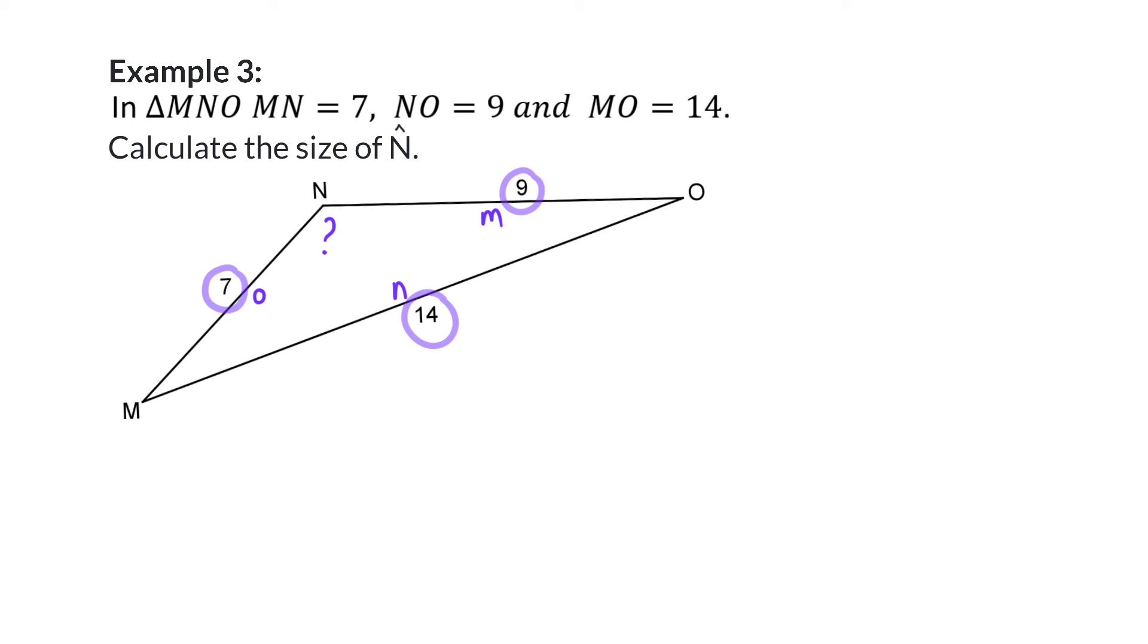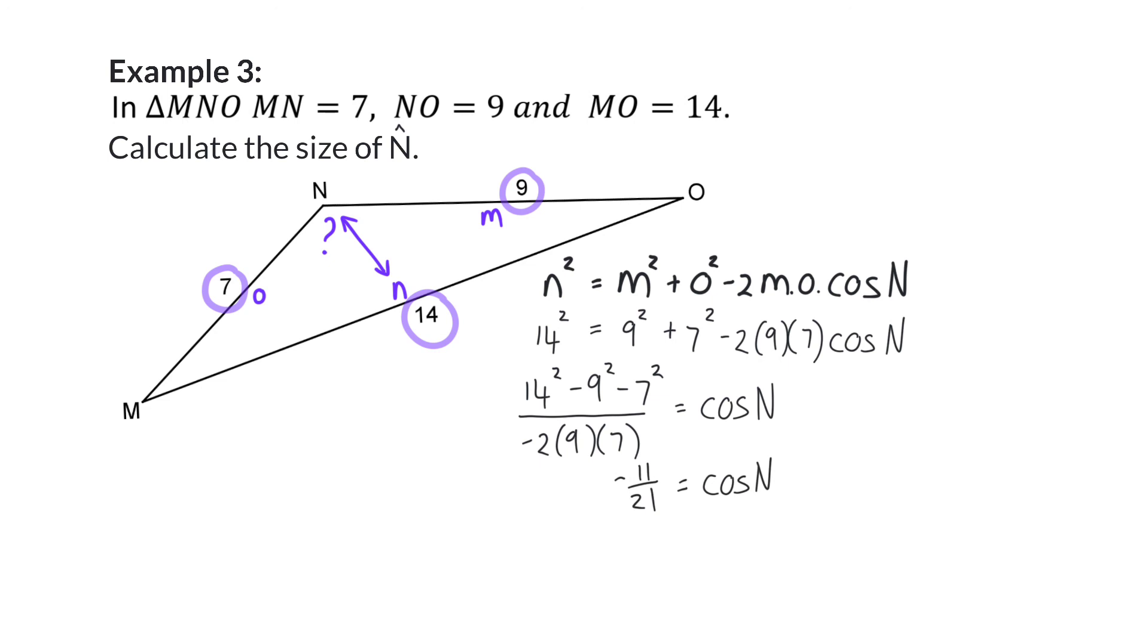So, if I again focus on my pair of side and angle, in our case N, the cos rule will start with N squared, and that will be equal to the other two sides squared and added, M squared plus O squared, minus two times the product of M and O, multiplied by cos of angle N. Next, we can substitute the given information, and then get cos N alone on the one side, and simplify.